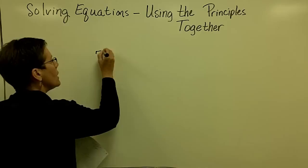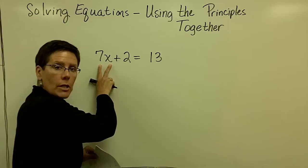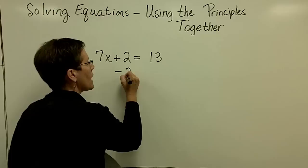The first problem that I'd like to share with you, I'm going to have two terms on one side, and my goal is going to be to isolate the term that contains the variable. So I would like to get the 7x alone, and it's got a plus 2 attached to it. So the way to get rid of the plus 2 is to subtract 2 from both sides of the equation.